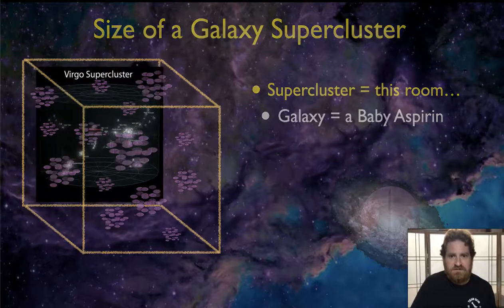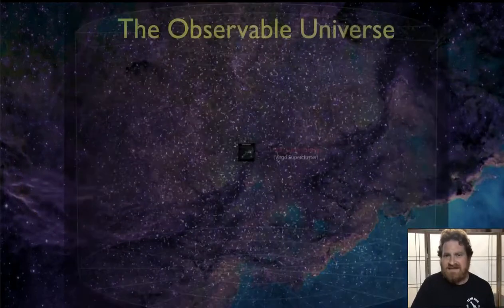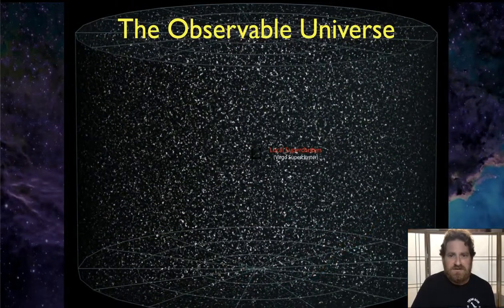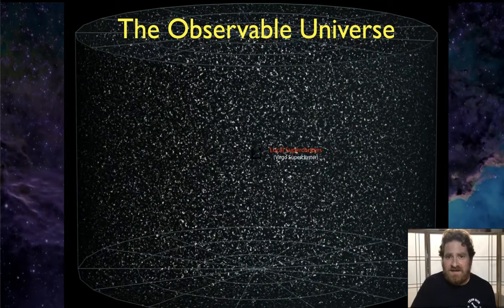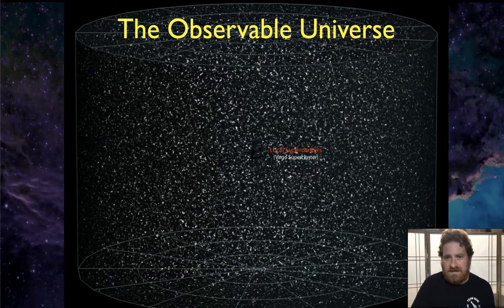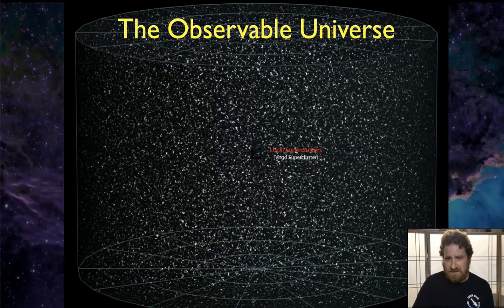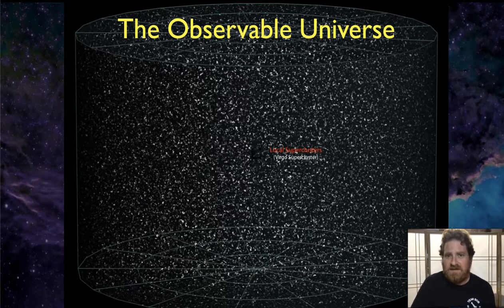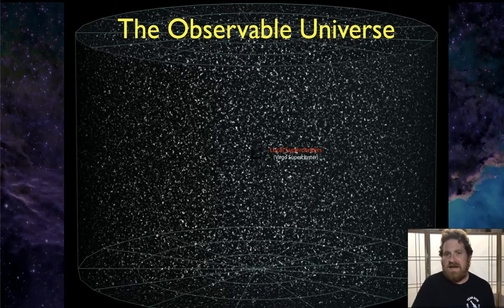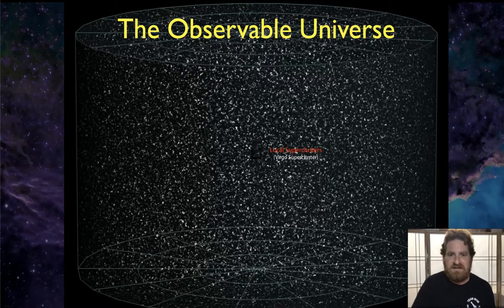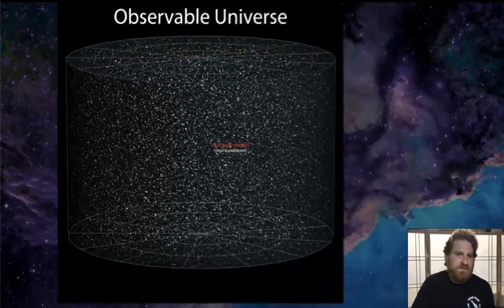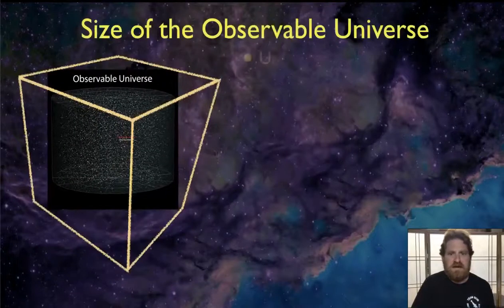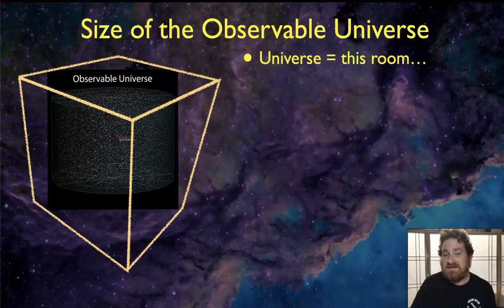The observable universe itself contains hundreds of billions, and even recent estimates suggest perhaps even trillions of individual galaxies, each of which has on average hundreds of billions of stars in it.